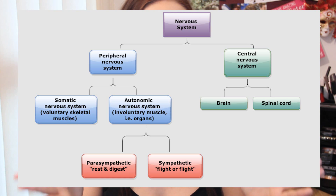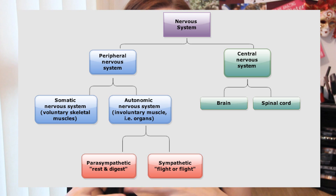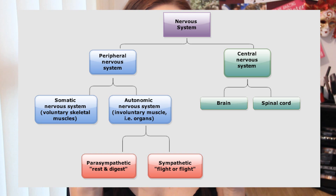I'm going to try and explain these to you with the help of this really useful diagram. Let me know in the comments if I've gone too fast or anything's too mixed up. The nervous system is made up of two main systems: the central nervous system and the peripheral nervous system.